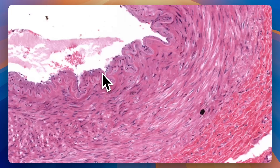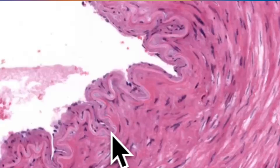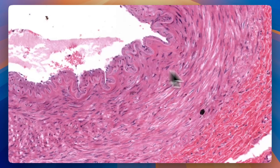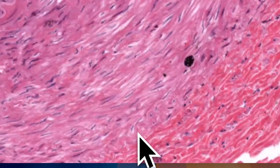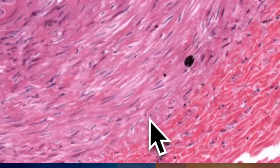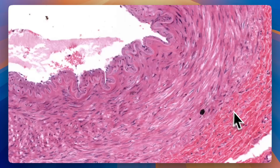In muscular arteries you'll find two of these layers that you can use to define the boundaries of the tunica media. There's an internal elastic lamina closer to the lumen and an external elastic lamina a little bit closer to the tunica adventitia. The internal elastic lamina is in between the intima and the media; the external elastic lamina is in between the media and the adventitia.